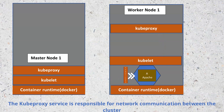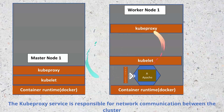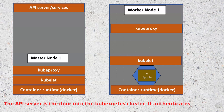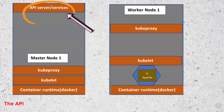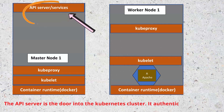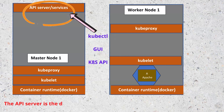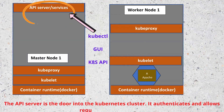Because the control plane controls the Kubernetes cluster, there are additional services that must run on the master nodes for the cluster to function well. One of these is the API server. The API server is the door that allows requests into the cluster — it's how you communicate with the cluster. If you're going to interface with Kubernetes, you must go through the API server. To communicate with Kubernetes you use client tools such as kubectl, a GUI, or the Kubernetes API.